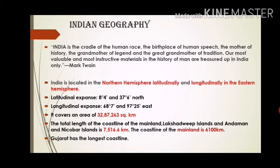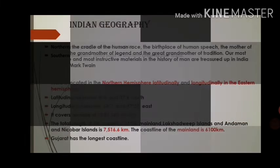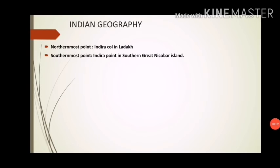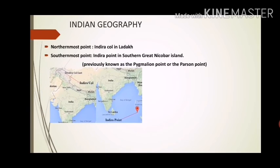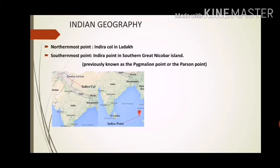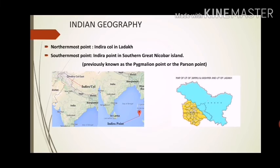The northernmost point of India is Indira Col, located in Ladakh. In some books you may find that Indira Col is located in Jammu and Kashmir, but according to the new map of India, this region now falls under Ladakh.